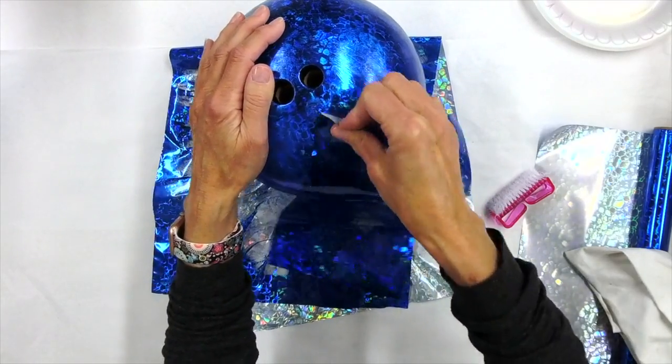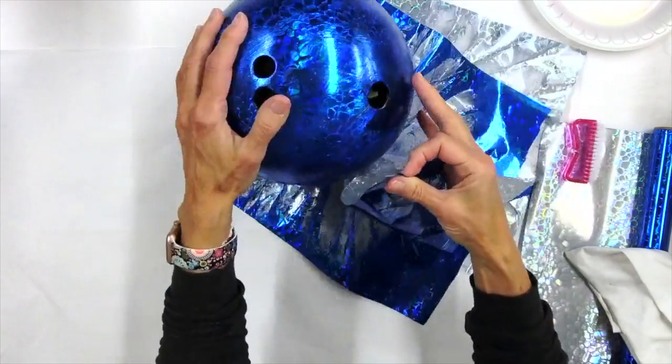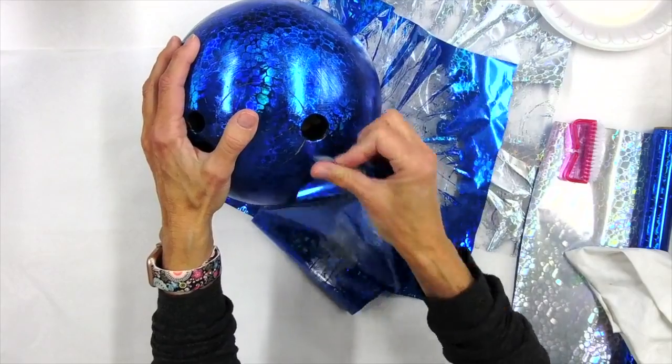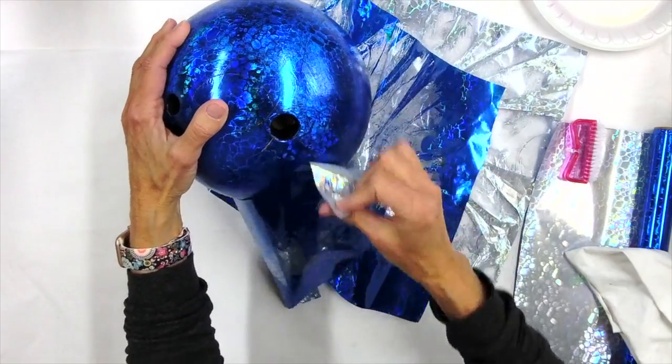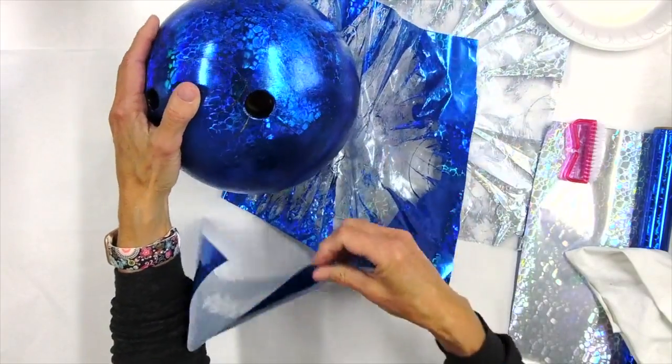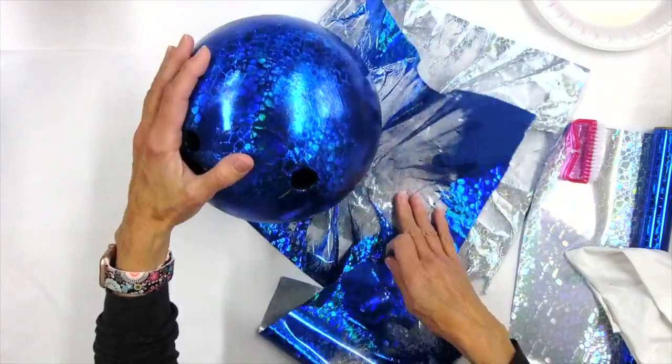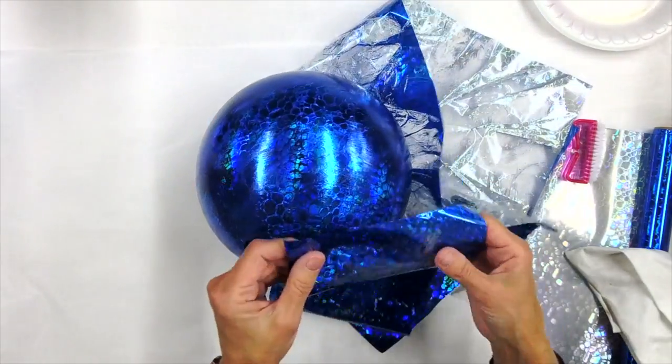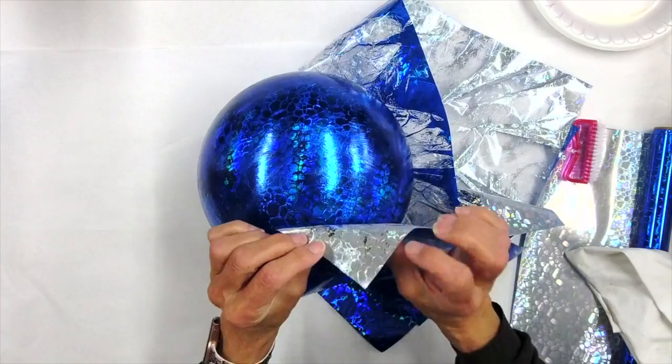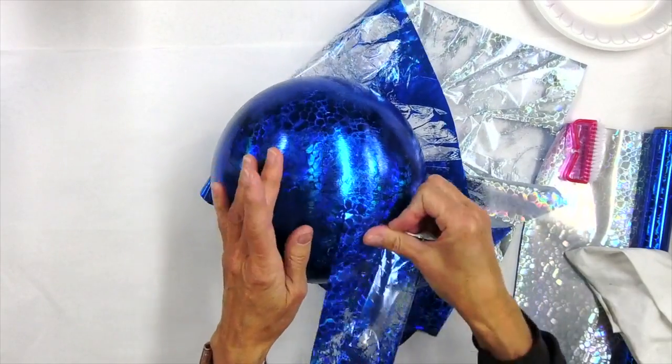So I'm putting the foil back underneath it so it won't stick to my table. And you can also do this pouncing technique, which will also help fill in any of those negative areas that just didn't get transferred.